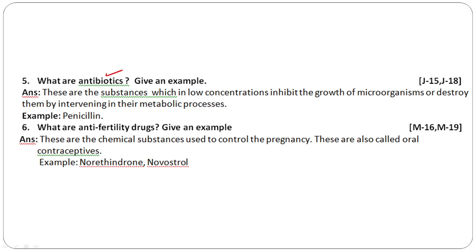What are antibiotics? Give an example. These are substances which in low concentration inhibit the growth of microorganisms or destroy them. They work by intervening in the metabolic process of microorganisms. The best example is penicillin.